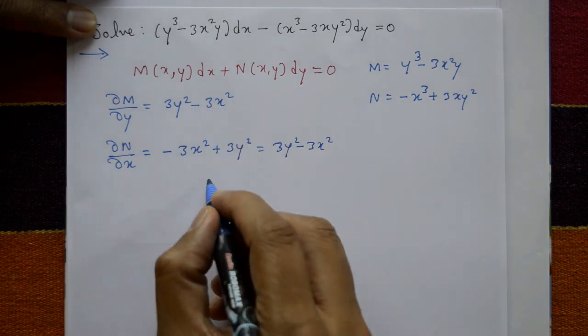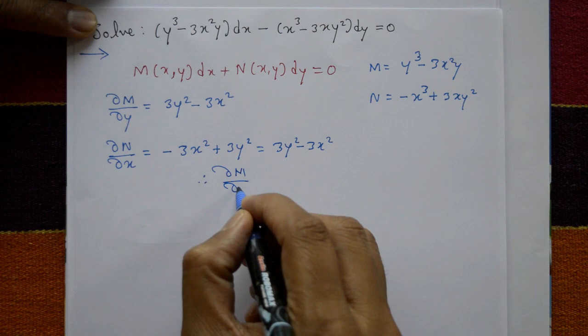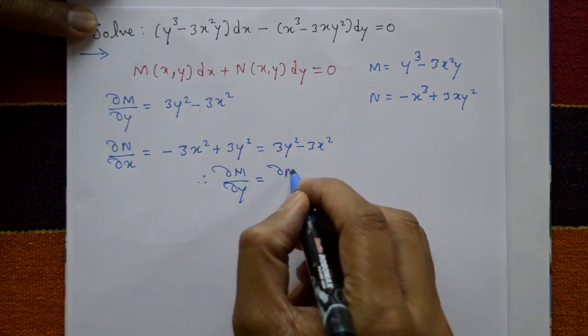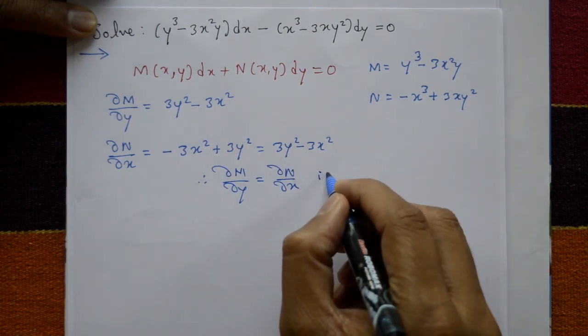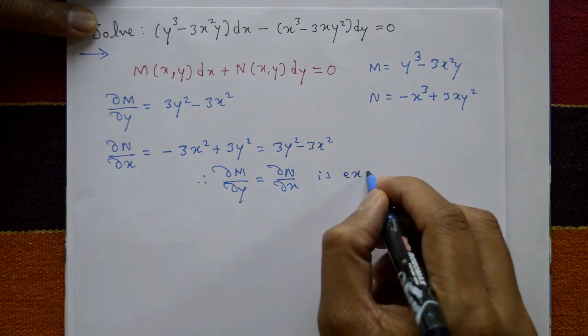See this, both are same. Therefore, del M by del y is equal to del N by del x. The given equation is exact.